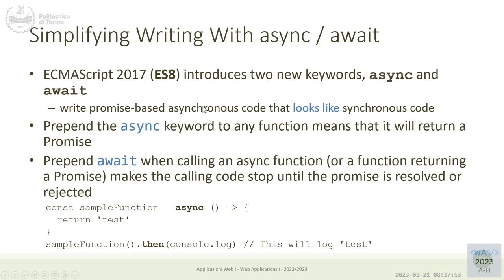So we can mix and match the traditional promise syntax and the new async/await syntax as we want, because at the end of the day, the promise object is the one that is working and this behavior is still the same. Async is a modifier for function definitions — you can define a function in any of the ways we know, and you can declare that function to be async. An async function means that that function will return a promise.